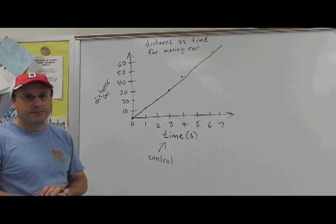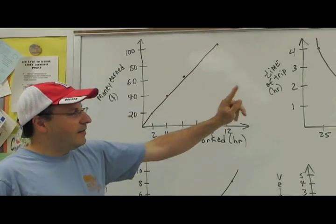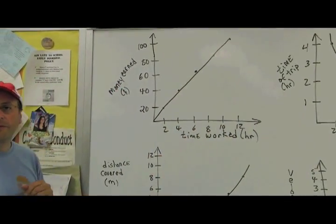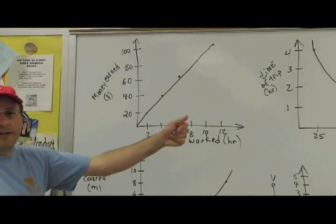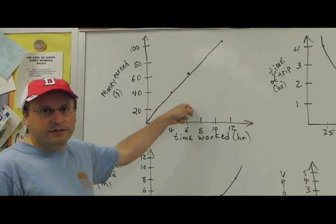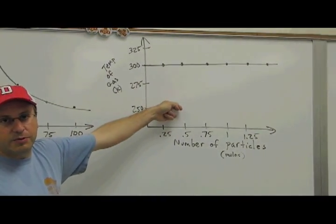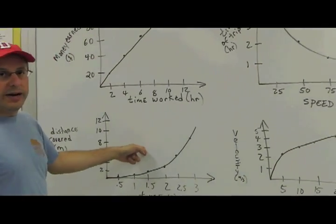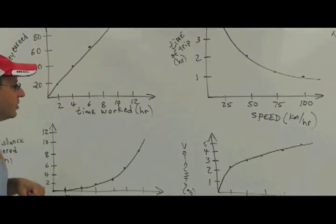I want to go through with you the five different graph types that you might run across throughout the course of the year. There may be others but these are the five most common: linear graphs, inverse graphs, no relationship graphs, squared graphs, and square root graphs. Here's how you're going to be able to identify them.